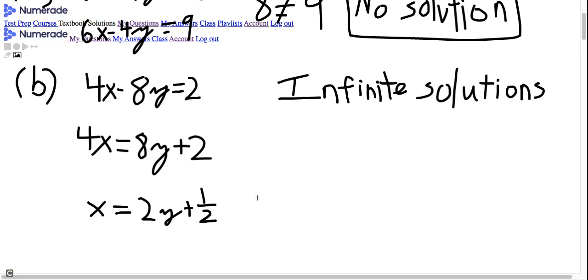Now that means the parameterization of our solution is going to be 2y plus 1 half. Since x is 2y plus 1 half, and y is just y.